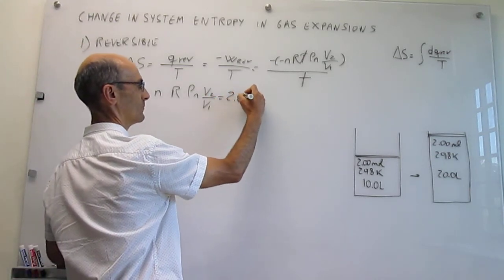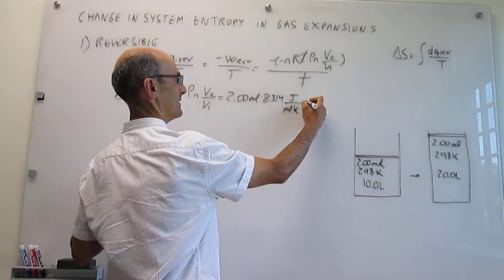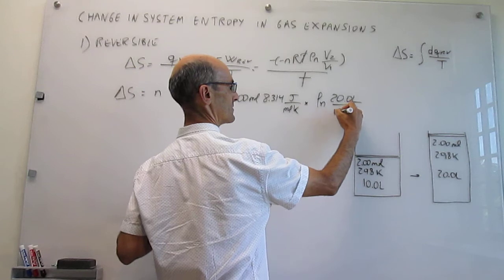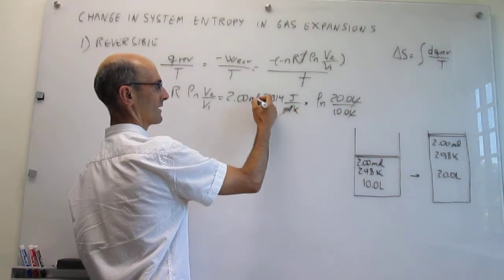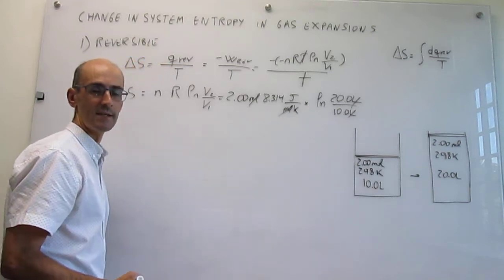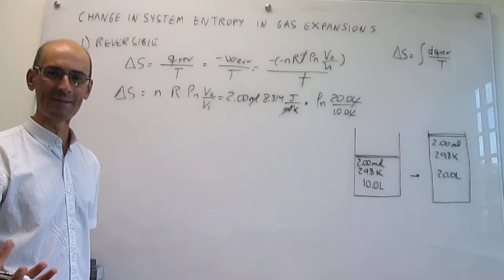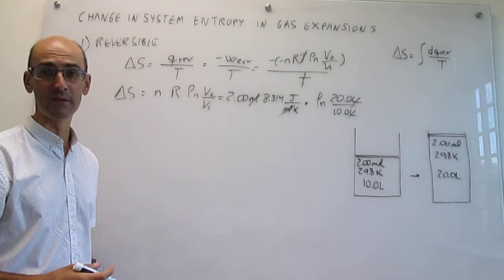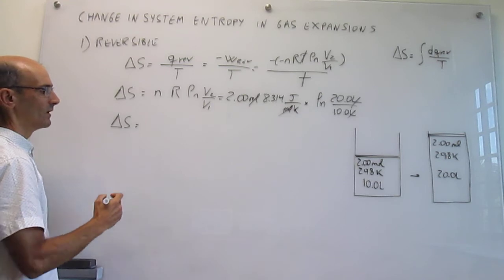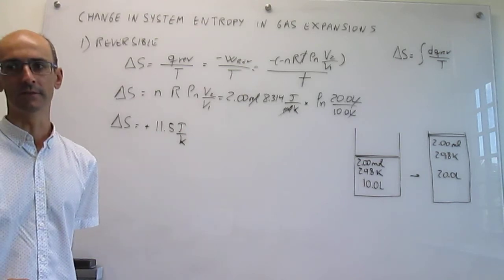Plugging in the numbers: 2.00 mol times R (8.314 J/mol·K) times the natural log of 20 liters over 10 liters. The mol units cancel, giving joules per Kelvin. Since this is the natural log of 2, a number greater than 1, the result is positive — confirming our expectation that the gas gains entropy when it expands. Therefore, ΔS = +11.5 J/K.